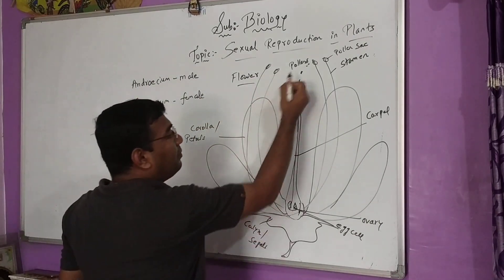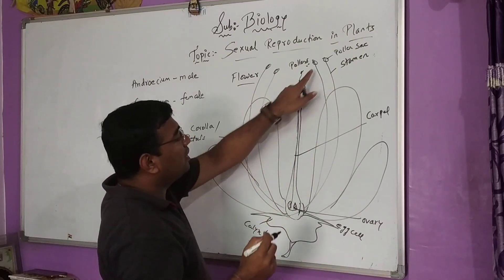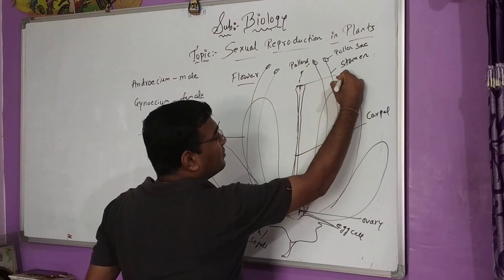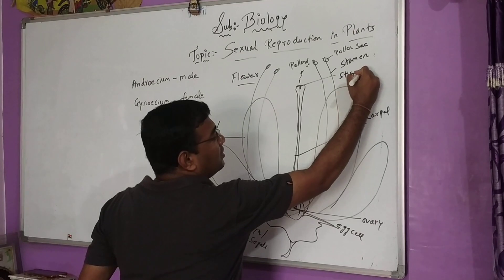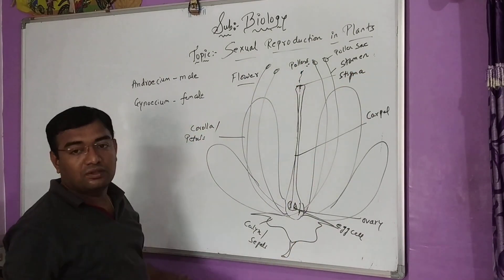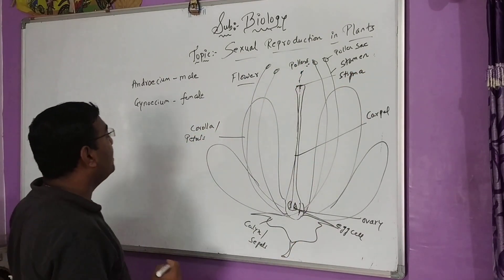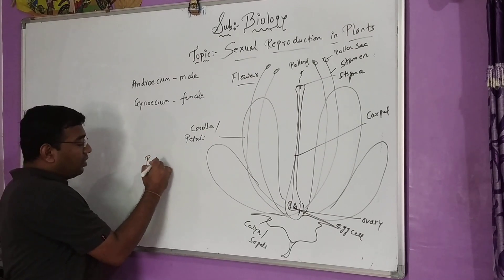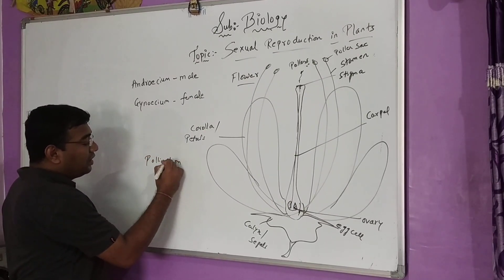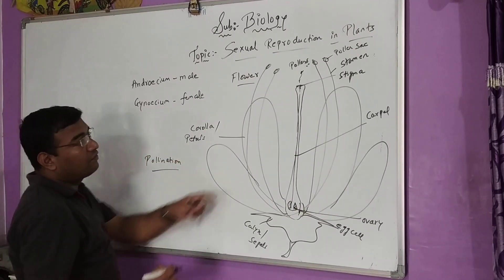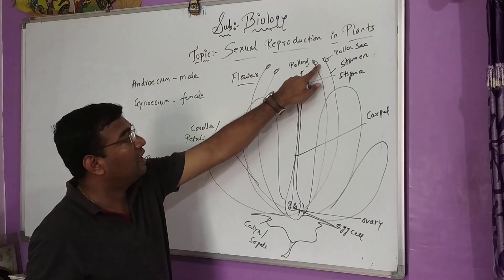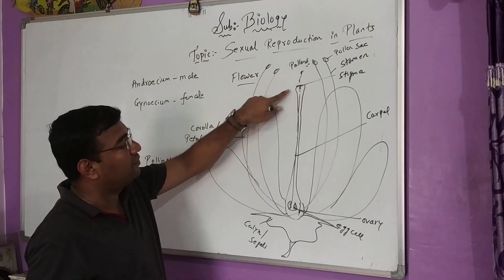This fusion happens with the help of the pollens. When the pollen falls on the stigma, this process is known as pollination — the transfer of pollen grain takes place from the male gamete to the female one, that is, the male gamete is being transferred onto the stigma.